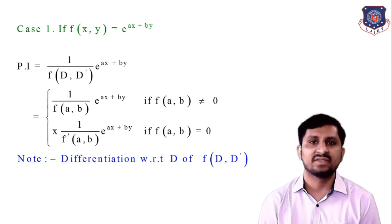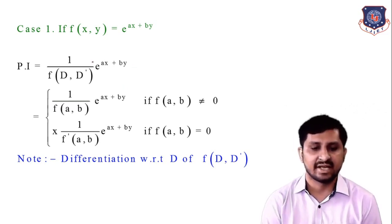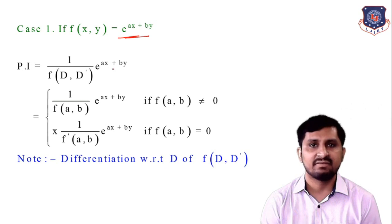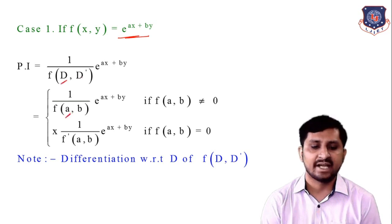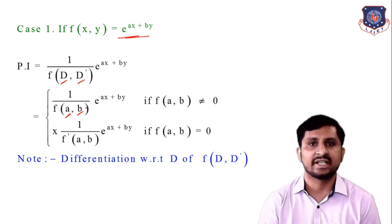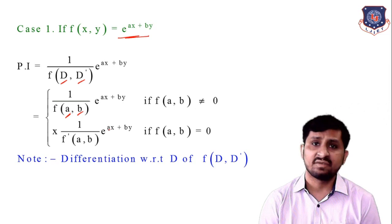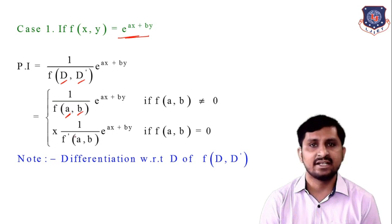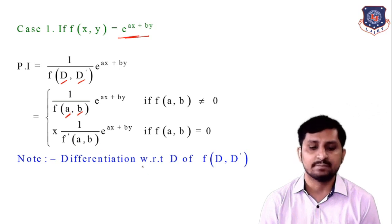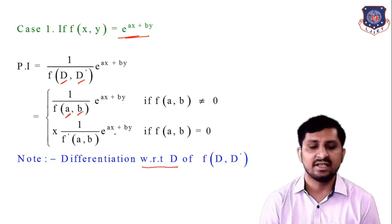Let's take a quick revision of this topic. Case 1: f(x,y) = e^(ax+by). The particular integral is 1/f(D, D') · e^(ax+by). You just have to take a instead of D and b instead of D'. The condition is the denominator must be non-zero, meaning f(a,b) must be non-zero. If f(a,b) = 0, then you have to multiply with x, giving x · 1/f'(a,b), where differentiation is with respect to D, not D'.